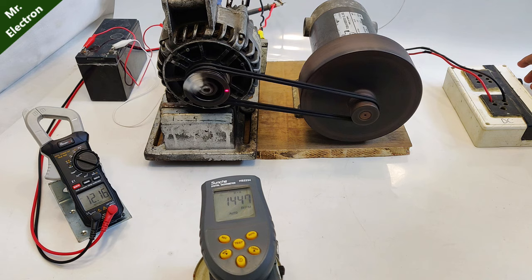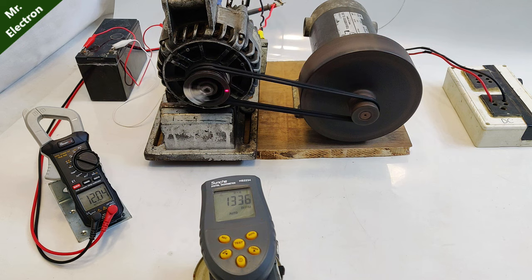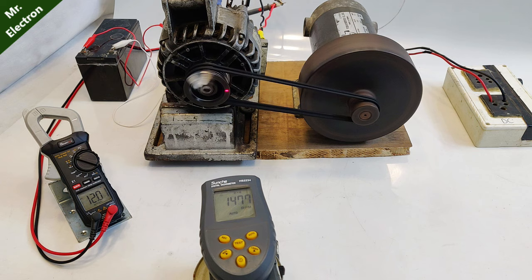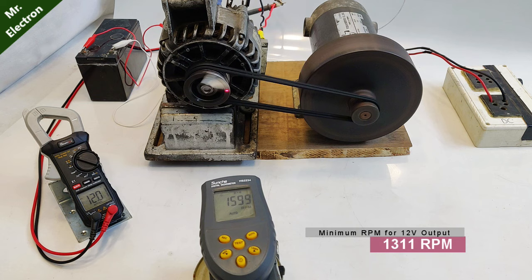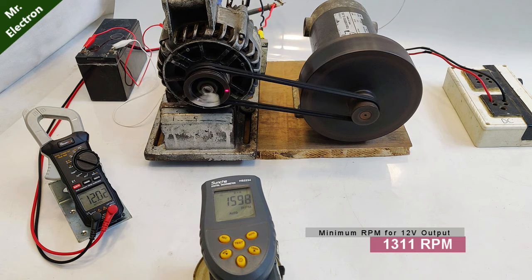Increasing it a little bit. And the voltage is also increasing. Yeah, so 1300 rpm. Yeah, 1300 rpm is at what? The alternator is producing exact 12 volts DC.